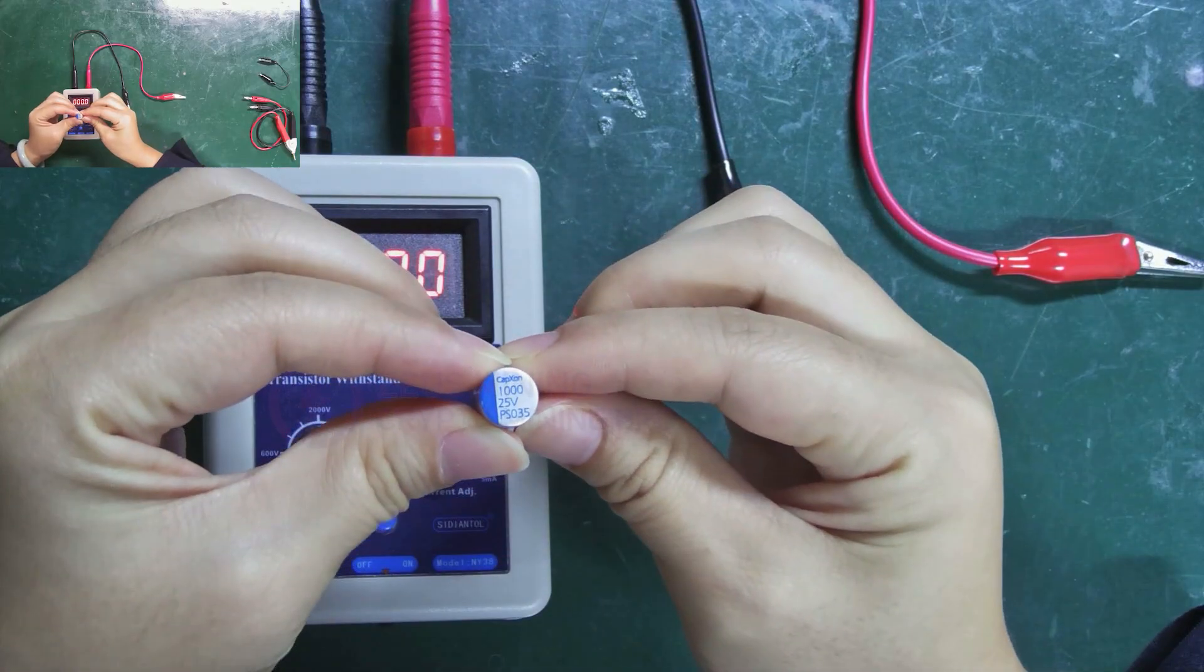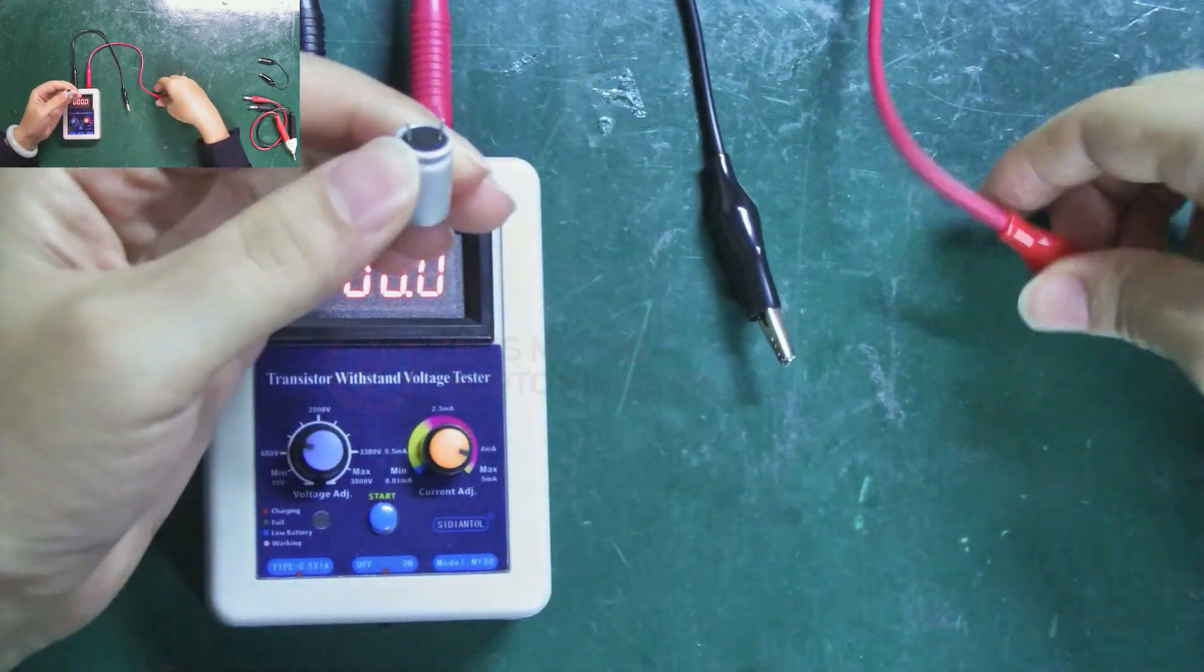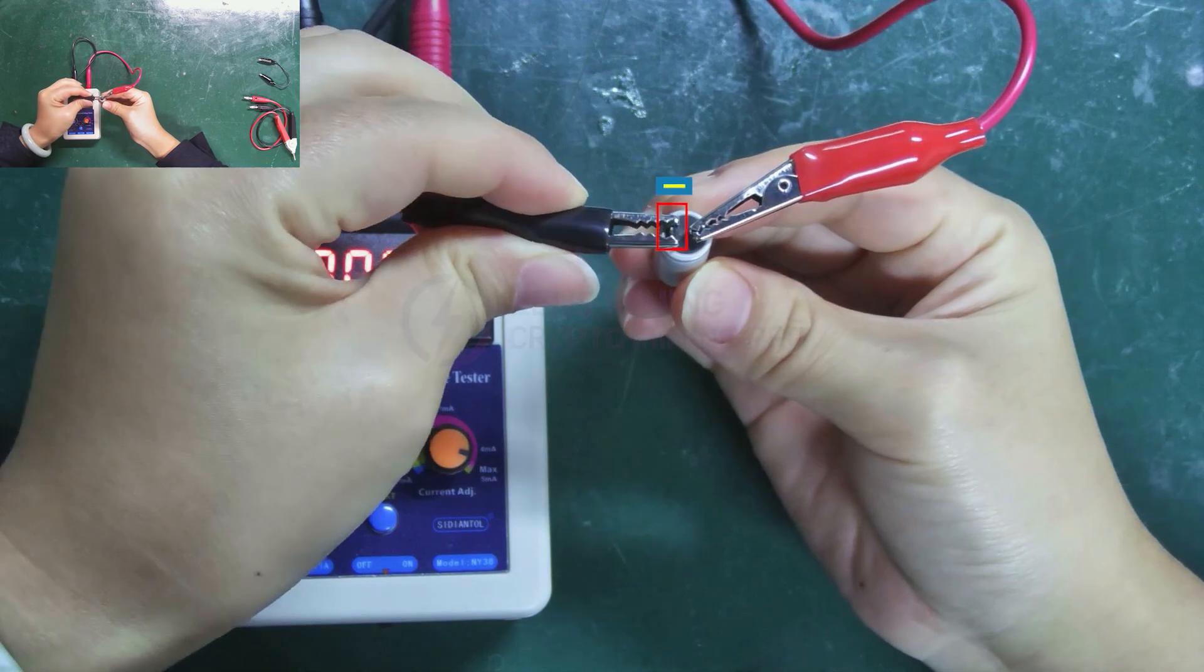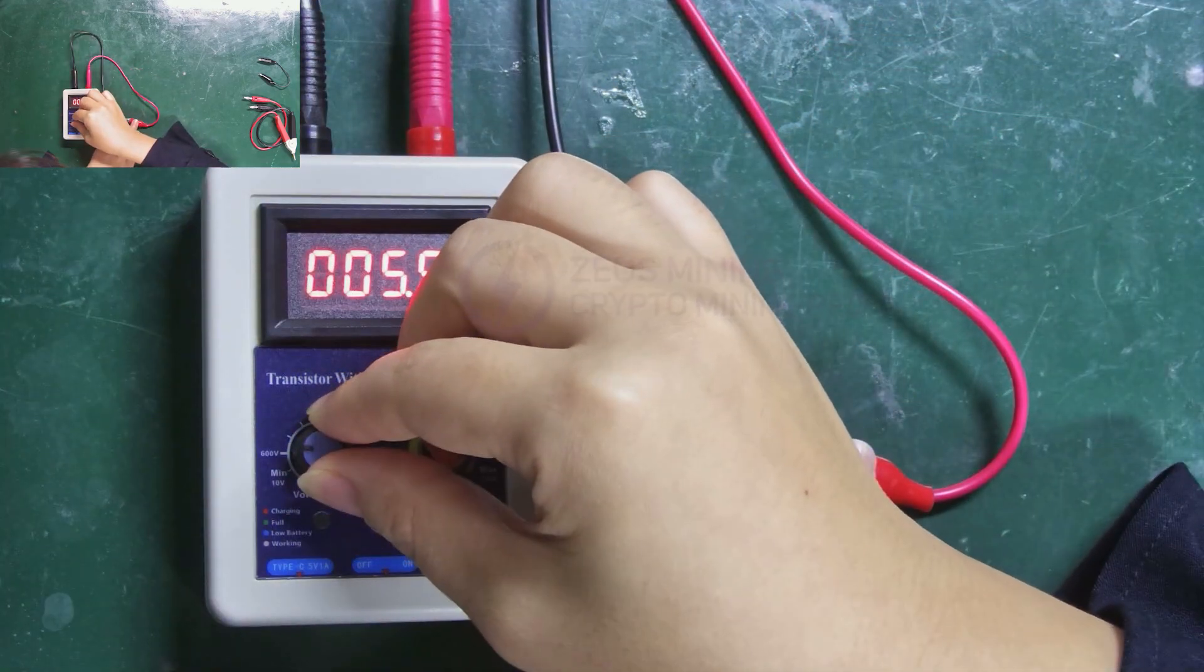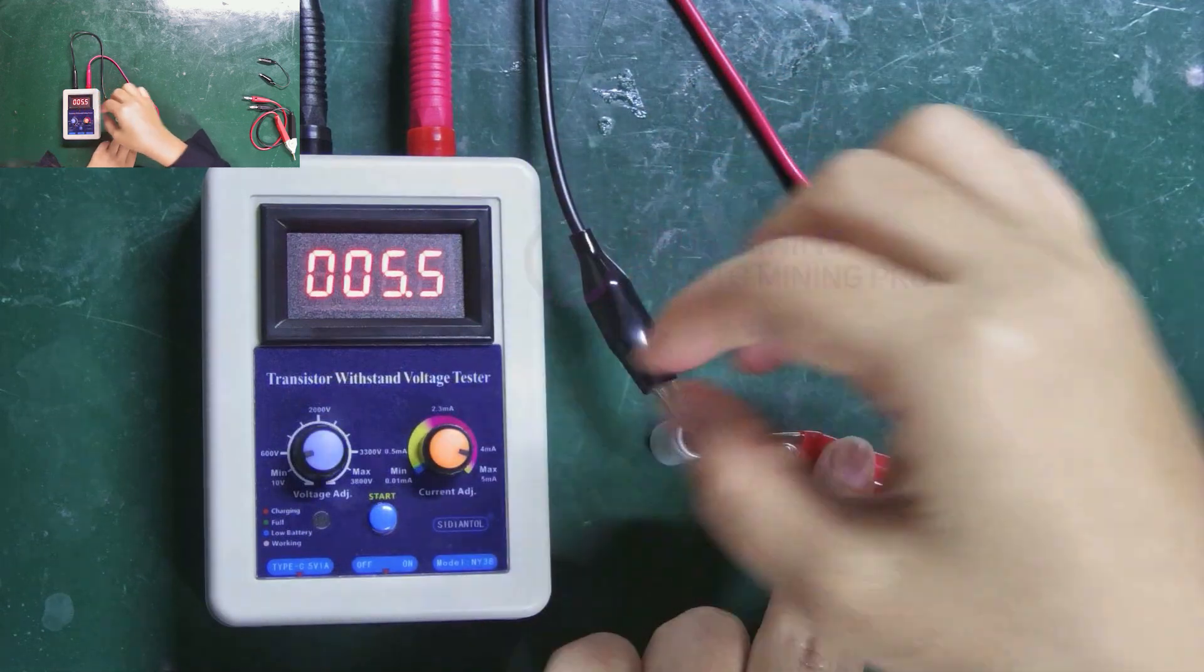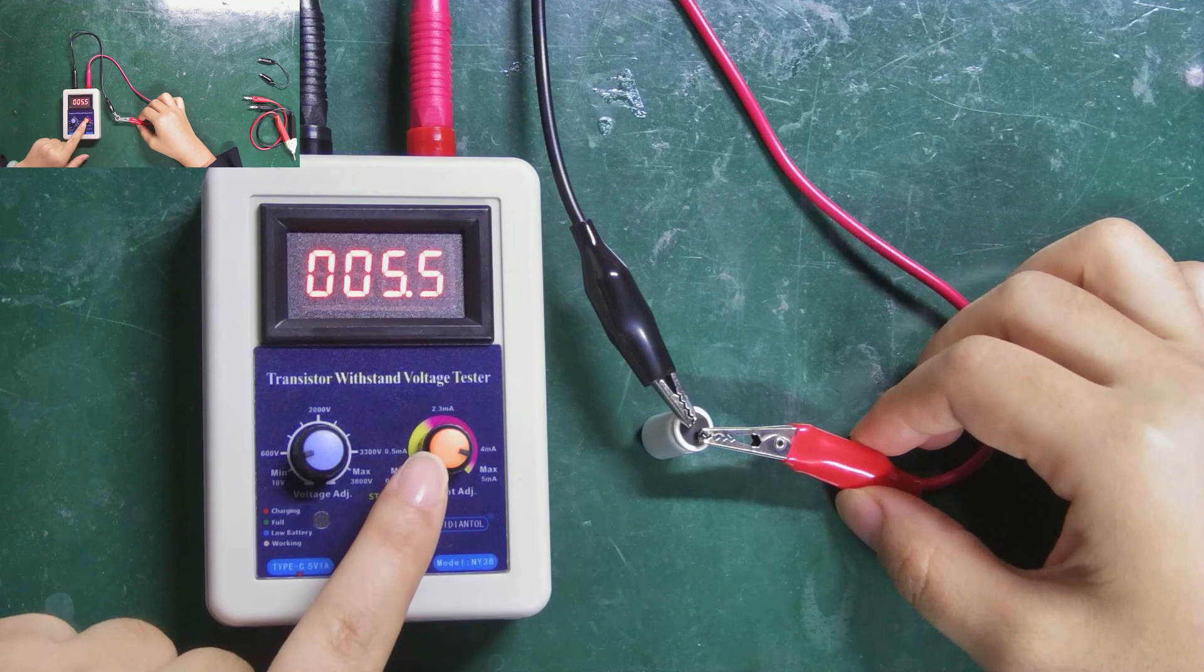Next, let's measure the 25 volts small capacitor. Likewise, connect the red clip to the positive pole and the black one to the negative. Adjust the voltage to be 1.5 times greater than the component's withstand voltage value. The current can still be set to maximum. No further adjustment is needed.